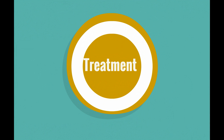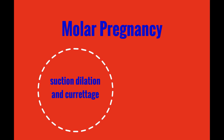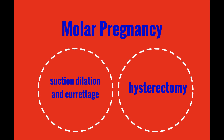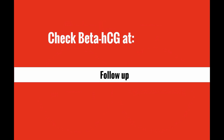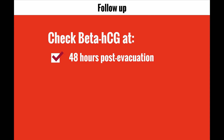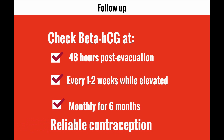The preferred method of evacuation for a molar pregnancy is suction dilation and curettage. A hysterectomy can be performed for women who do not wish to preserve childbearing. For follow-up, patients should be monitored with serial beta-HCG levels at 48 hours post-evacuation, every 1 to 2 weeks while elevated, and then monthly for another 6 months. During this time, the patient should use reliable contraception.